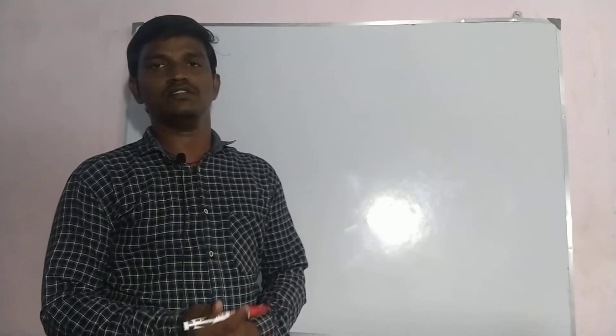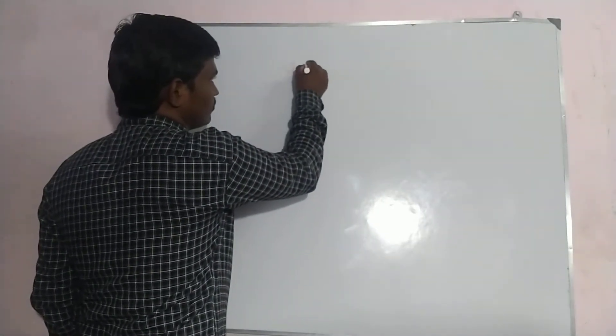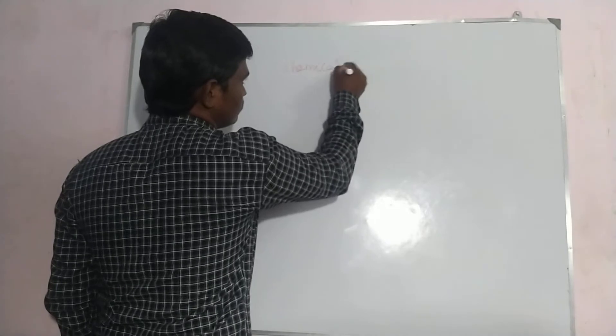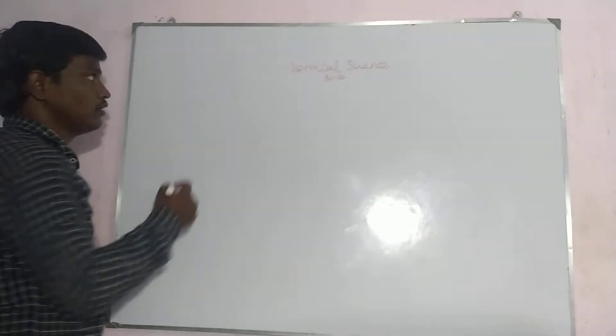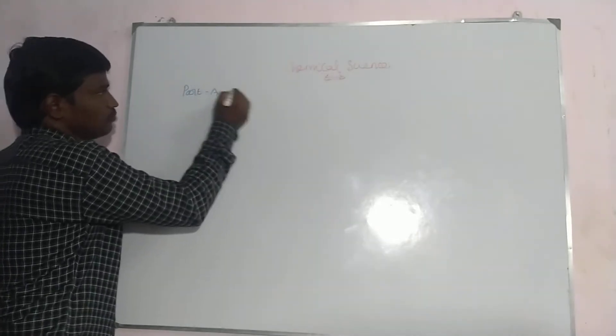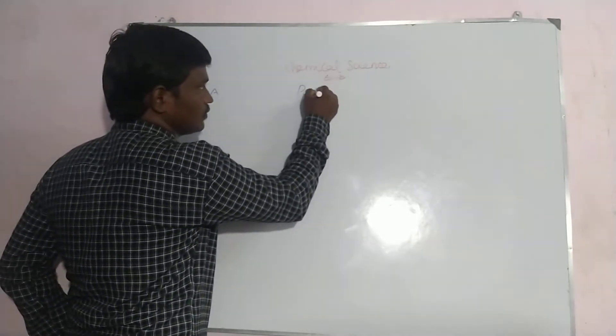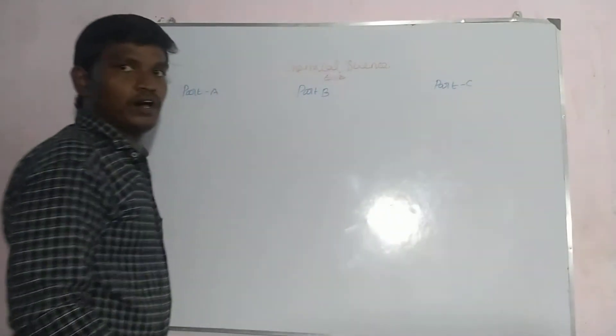Good morning friends. How to write CSIR examinations — what they are, and the question pattern — is in your chemical science exam. Chemical science is for any MSc Chemistry students; they can apply for Part A, Part B, and Part C.